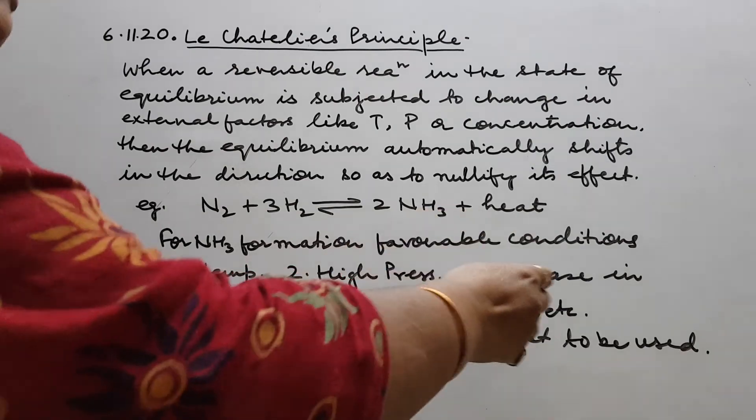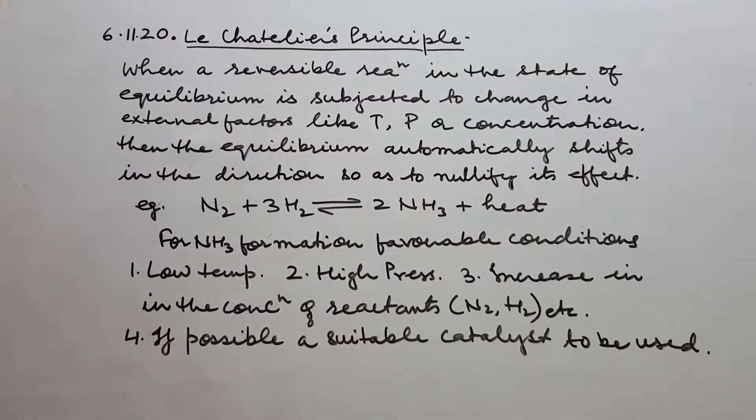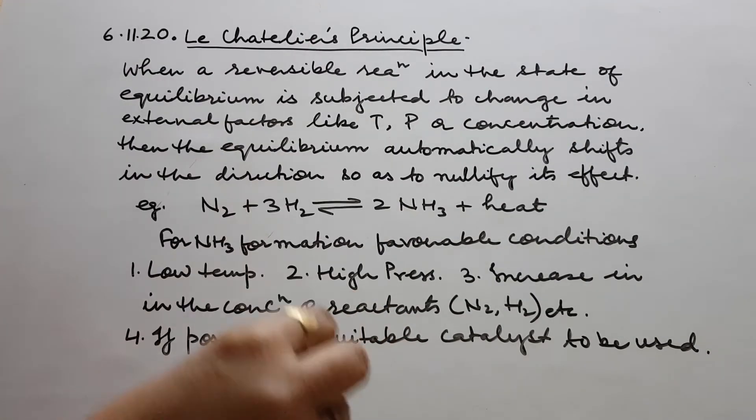Then increase in the concentration of reactants like ammonia from outside we should arrange. And if possible, a suitable catalyst can be used. Provided it is known. For every reaction, catalysts are not reported.